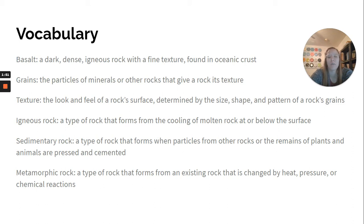Igneous rock: a type of rock that forms from the cooling of molten rock at or below the surface. Sedimentary rock: a type of rock that forms when particles from other rocks or the remains of plants and animals are pressed and cemented.